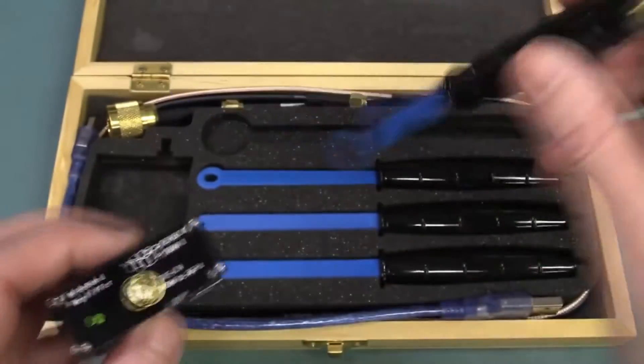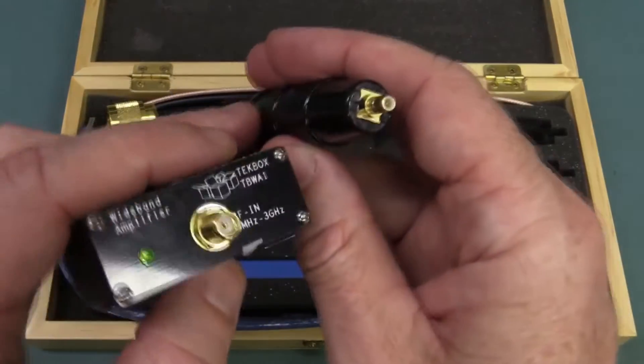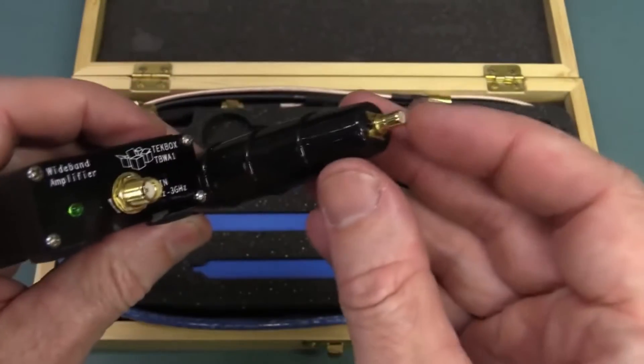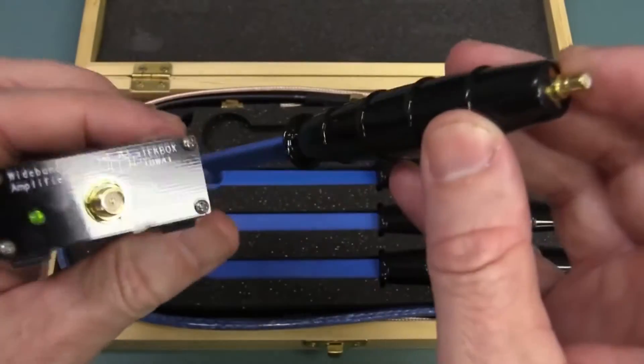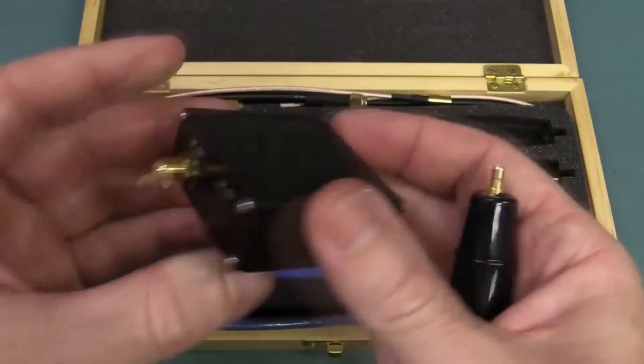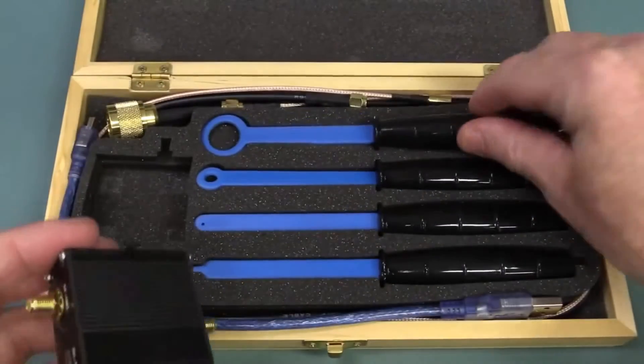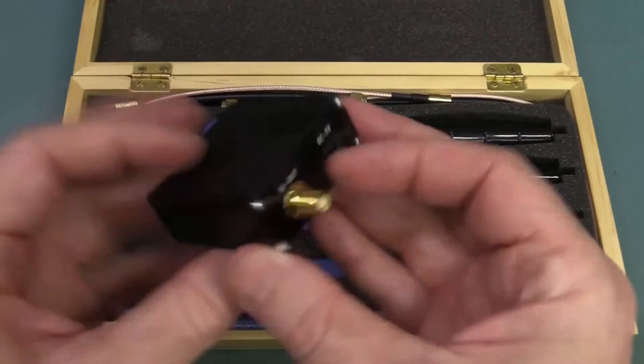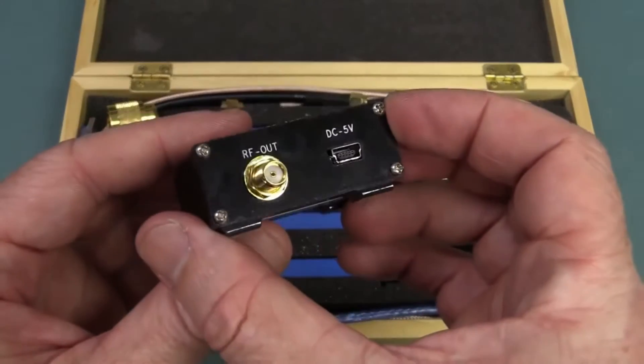So basically, I'll explain and maybe demo this in a minute, but it looks like we've got an SMB connector on the end here, and we whack that over to the RF input, and then we hook the RF output up to our spectrum analyzer, and we can do EMC pre-compliance with this sucker.